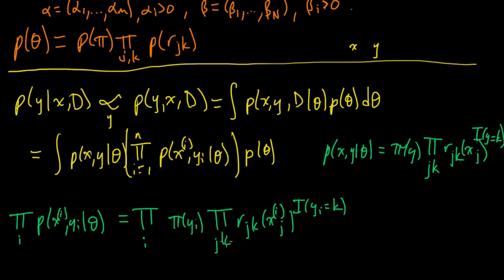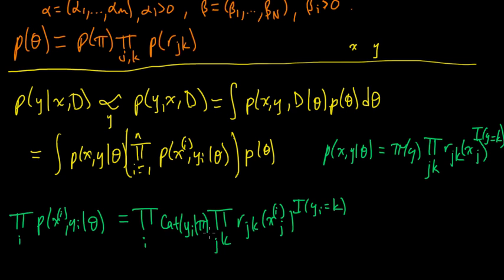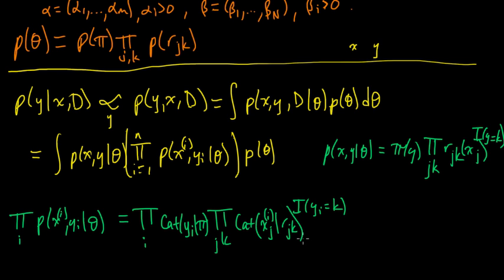Let me rewrite these terms using categorical distribution notation. The term π(Y_i) is the categorical distribution: Cat(Y_i | π). And the term R_{j,k}(X_{i,j}) is Cat(X_{i,j} | R_{j,k}). That notation will be helpful in a moment.